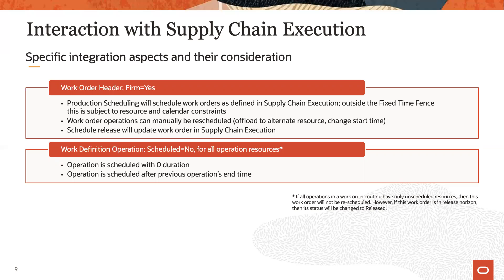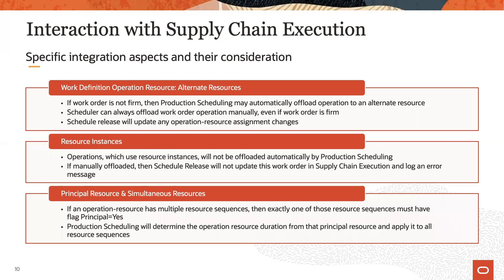If the scheduled flag on a work order operation is set to no for all operation resources, then production scheduling will schedule this operation with a duration of zero, adjacent to the previous operation. And if multiple resource sequences are defined on an operation resource, then exactly one of them must be declared as principal resource. Production scheduling will then use the duration from that principal resource and consume all involved resources for that amount of time.